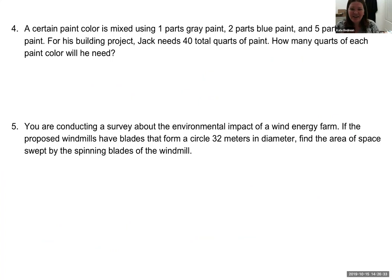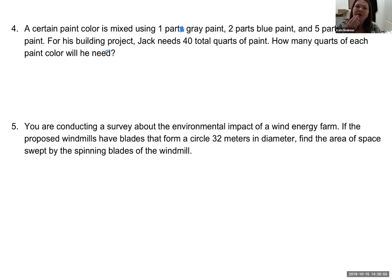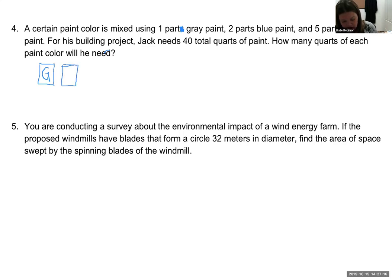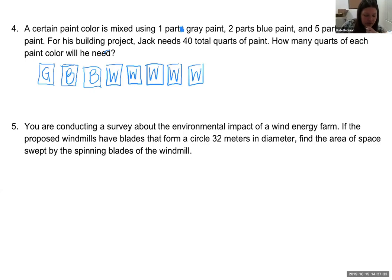Number four: a certain paint color is mixed using one part gray paint, two parts blue paint, and five parts white paint. For his building project, Jack needs 40 total quarts of paint. How many quarts of each color will he need? A lot of students stare at this and never bother to draw a picture. Whenever you have a ratio and proportion, pictures can be your friends.